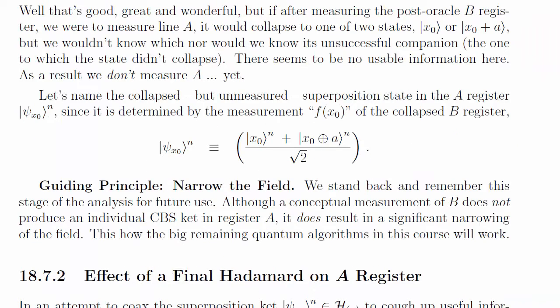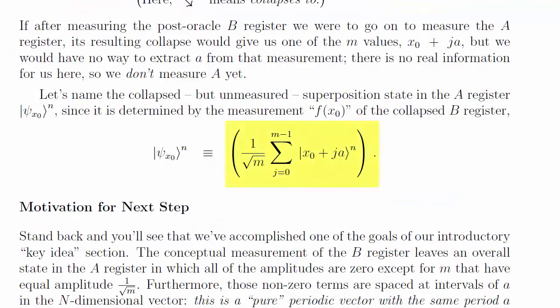Just like Simon's conceptual B register measurement gave us a superposition of two states, Shor's will give us a superposition of little m states. So far, so good.